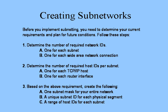We're going to be using the power of 2 to determine all of this. But before we get into actually creating our subnet mask for our network, we're going to have to come up with a formula to help us determine exactly what we've got to have. I have basically three steps outlined. Step number one: determine the number of required network IDs — I need one for each subnet and one for each wide area network connection.